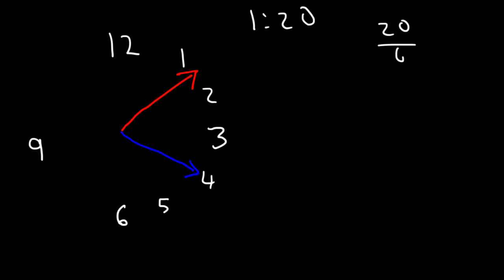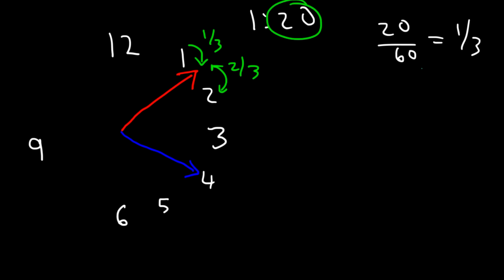20 divided by 60 is a third. So what this means is that the hour hand is 1 third away from the 1 o'clock hour, or the value of 1. And it's 2 thirds away from the second hour, or from 2. So that's why you want to take whatever your minute value is and divide it by 60, so you can get the fraction of how far it is from one of the hours. And to find the distance from the other one, it's going to be 1 minus the original fraction. So 1 minus 1 third will give you 2 thirds.